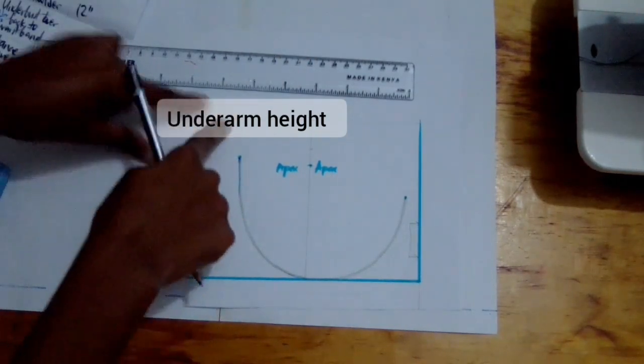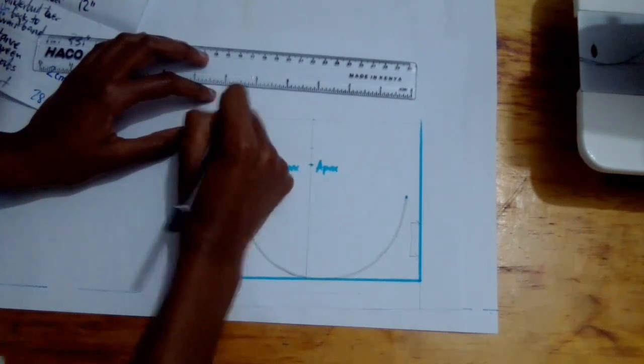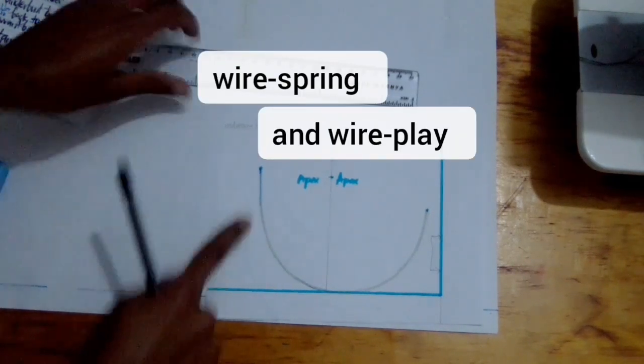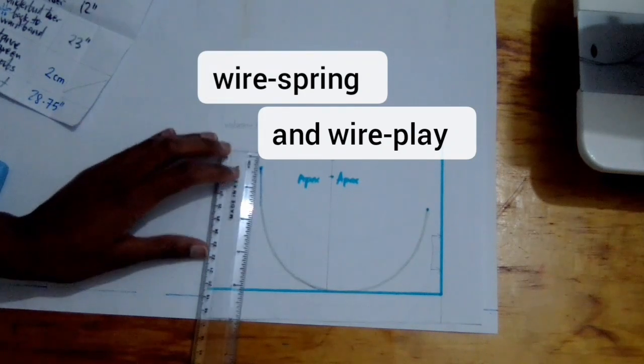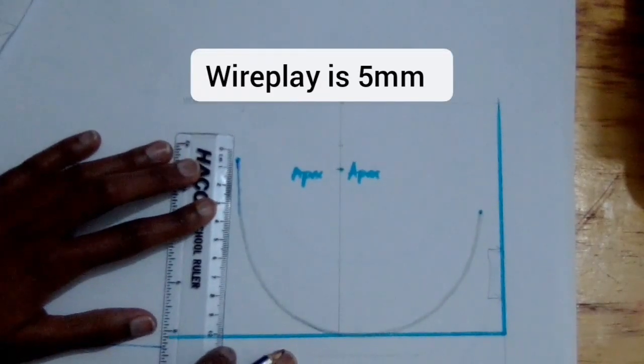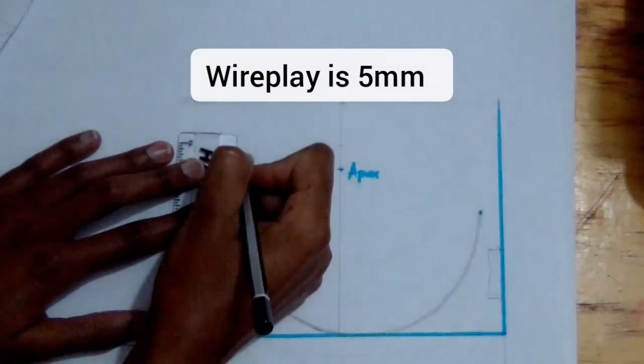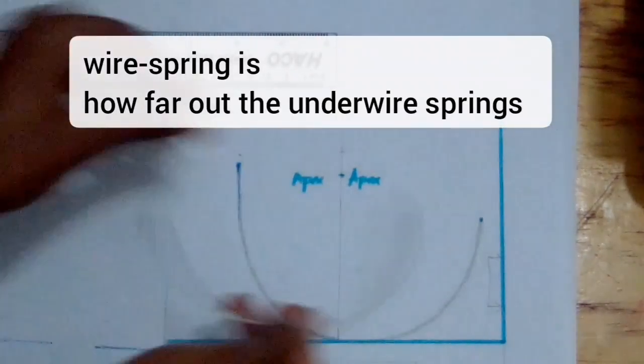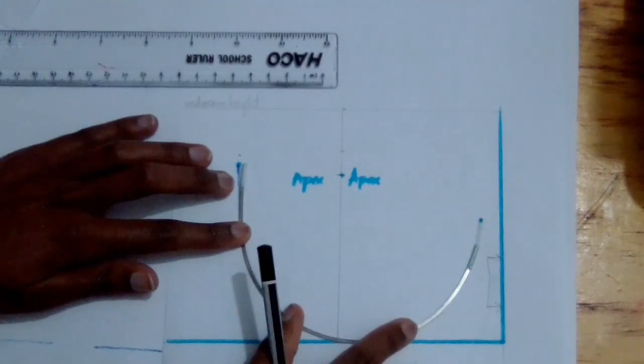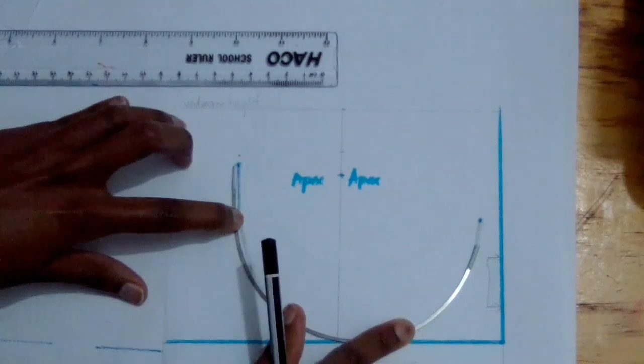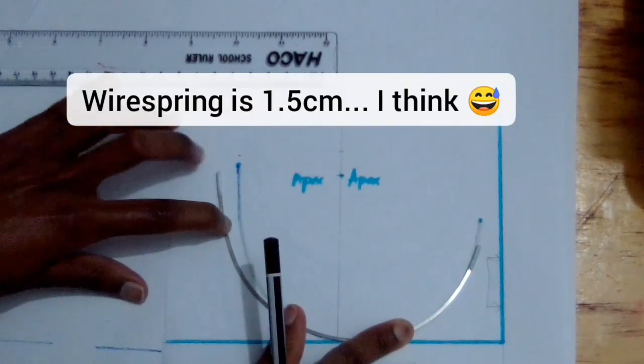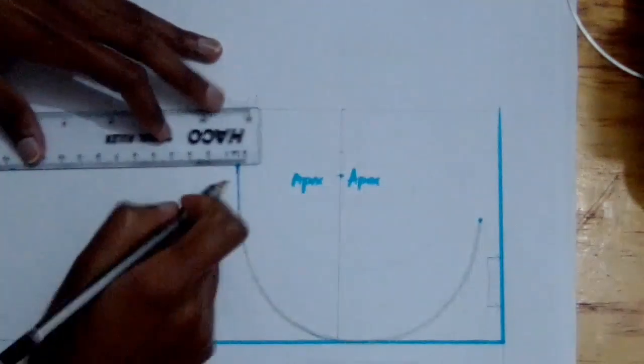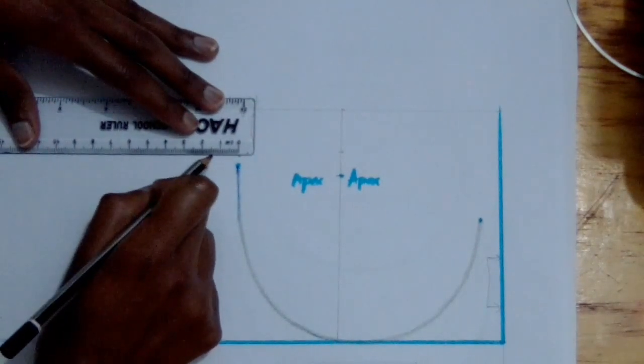So I can draw a line perpendicular to this point like this. That will give me my underarm height. Now here's the thing: underwires are supposed to have wire spring and wire play. For underwires, wire play is five millimeters. Wire spring is how far out the underwire springs. Let me put the underwire here—so when you're wearing it and it's stretched out, it's going to open up a little. That's usually like maybe one cm, one and a half cm. So I'm just going to go, let's say, one and a half cm.